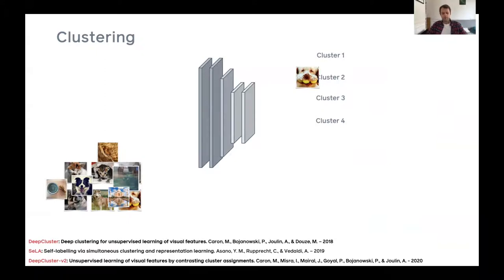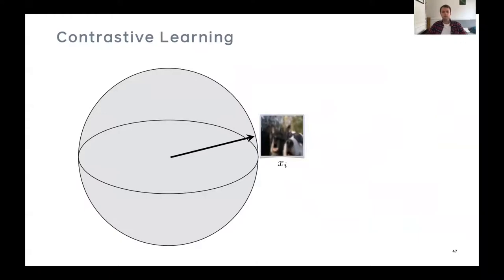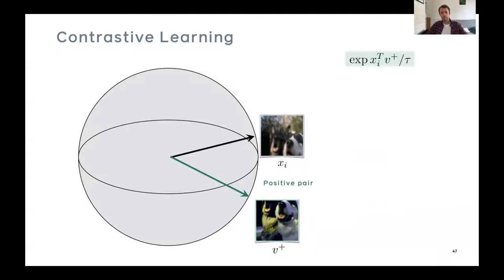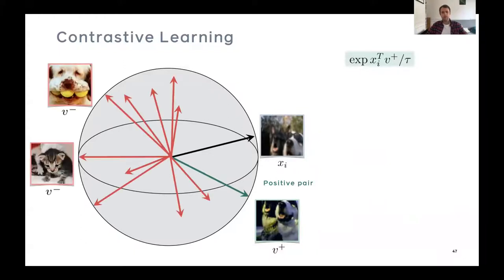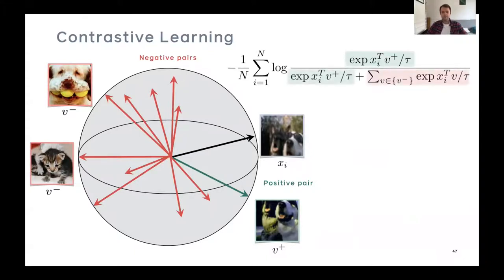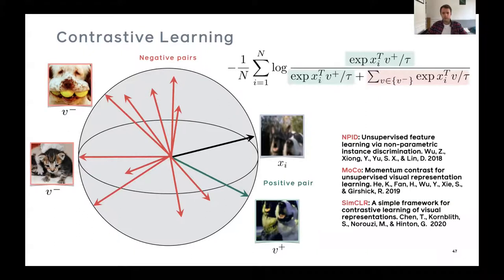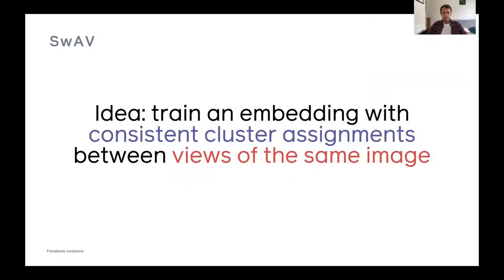I worked more on the clustering direction. In clustering, you pass data through a network to get features, cluster those features, use the clusters as a classification task, and alternate these two procedures to learn a good network. The third line of work is contrastive learning: take two data augmentations of the same image as a positive pair — they should be together — and treat all other images as negative pairs. This forms a classification objective. Important methods based on this principle include MoCo and SimCLR. Our work aimed to bridge the gap between clustering and contrastive ideas.